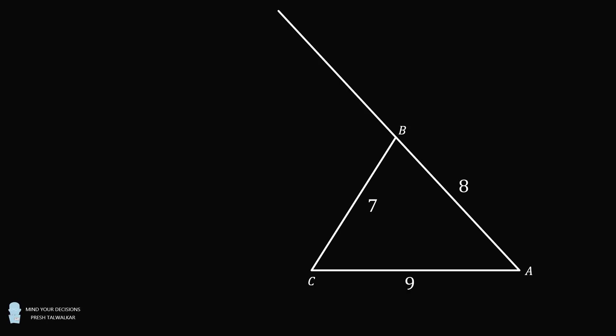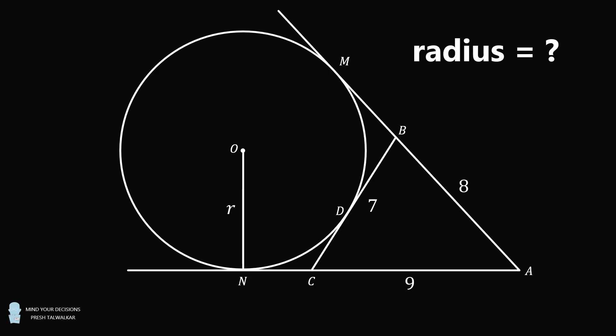Extend side AB and extend side AC, and then construct a circle O that is tangent to the extended line through AB, the extended line through AC, and the line segment BC. This is tangent at the points M, D, and N. The question is what is the radius of circle O?